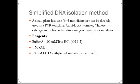Simplified DNA isolation method: a small plant leaf disc of 3 to 4 mm diameter can be directly used as a PCR template. Arabidopsis, tomato, Chinese cabbage, and tobacco leaf discs are good template candidates. Reagents: Buffer A — 100 millimolar Tris-HCl at pH 9.5, 1 molar potassium chloride, and 10 millimolar EDTA (ethylene diamine tetra acetic acid).